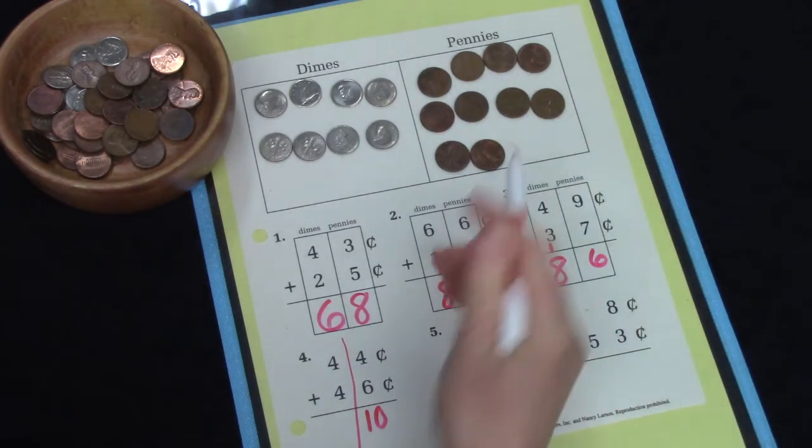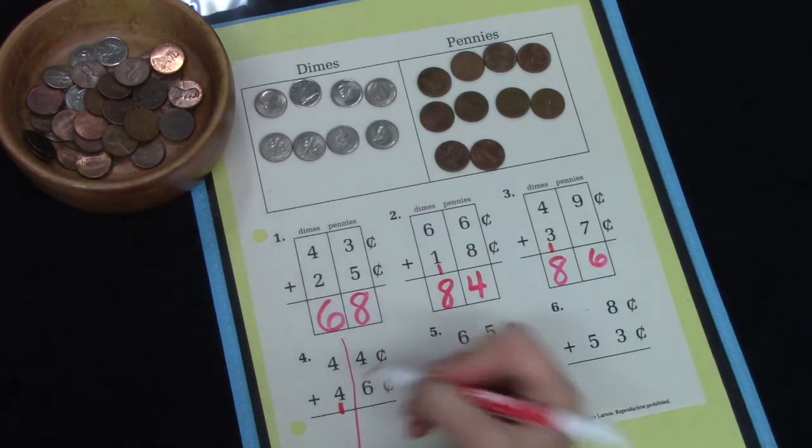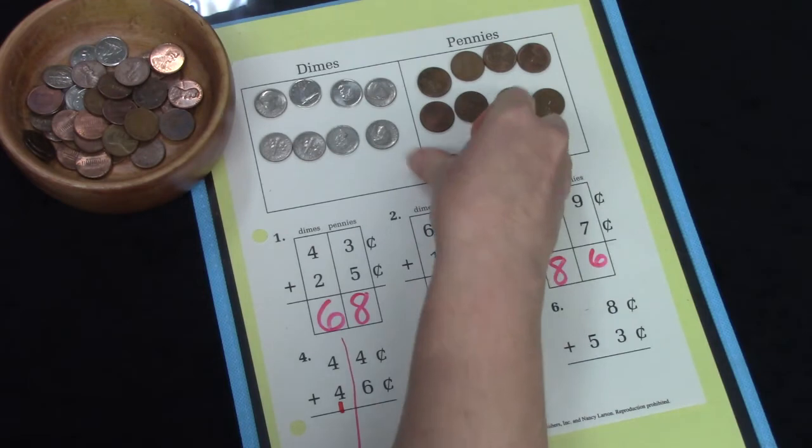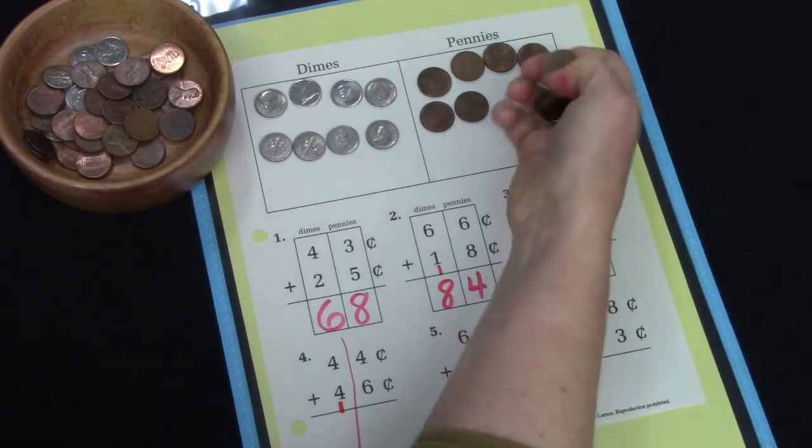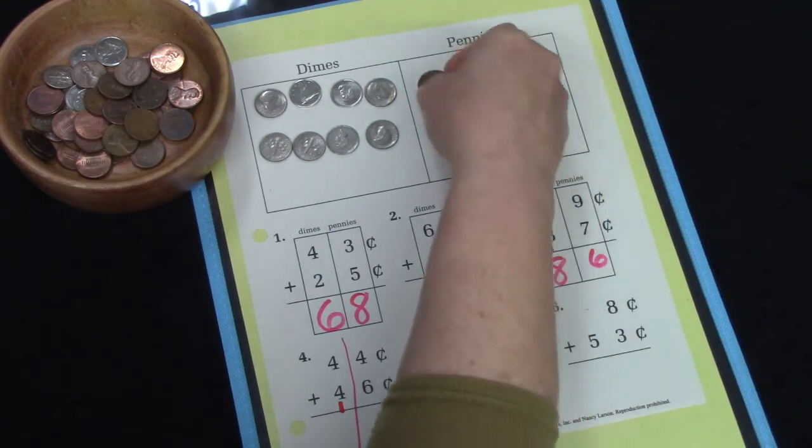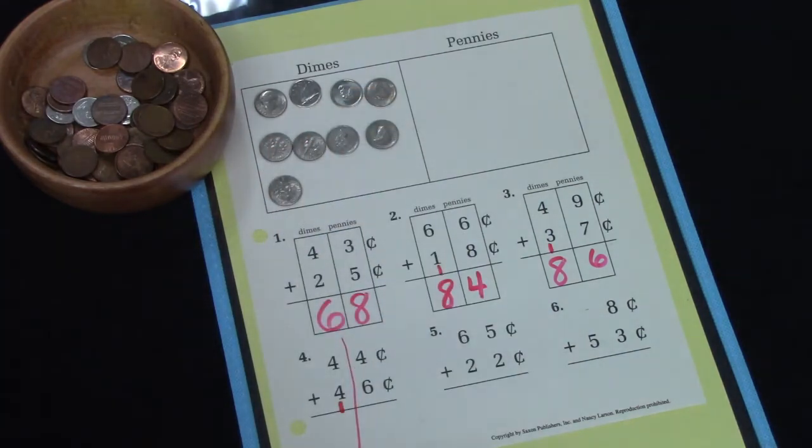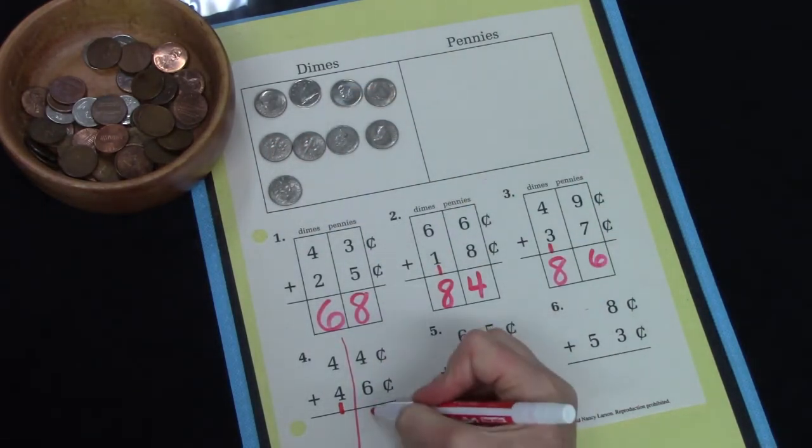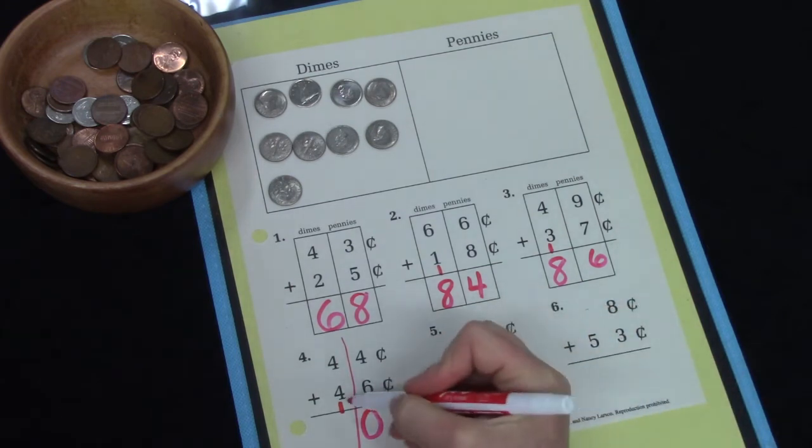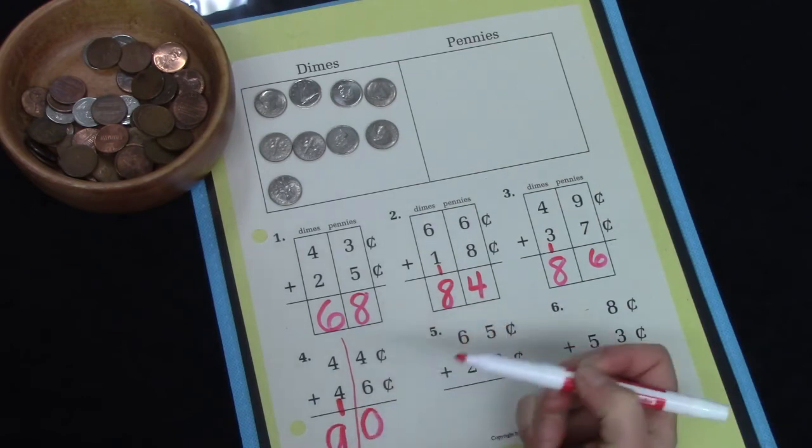We're going to have to take a group of 10 and move it over here. So we're going to put a group of 10 over here: 1, 2, 3, 4, 5, 6, 7, 8, 9, 10. And we will put a dime there. Well, how many pennies do we have left? 0. This kind of makes our 10. Do you see that we have a 1 here and a 0 here?